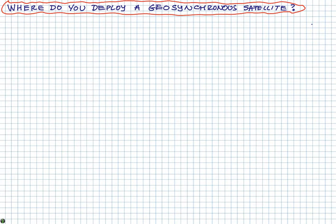Okay, so where do you deploy a geosynchronous satellite? Well, first of all, what do we mean by a geosynchronous satellite? A satellite is anything which is revolving around something else. So the moon is a satellite of the earth, the earth is a satellite of the sun.